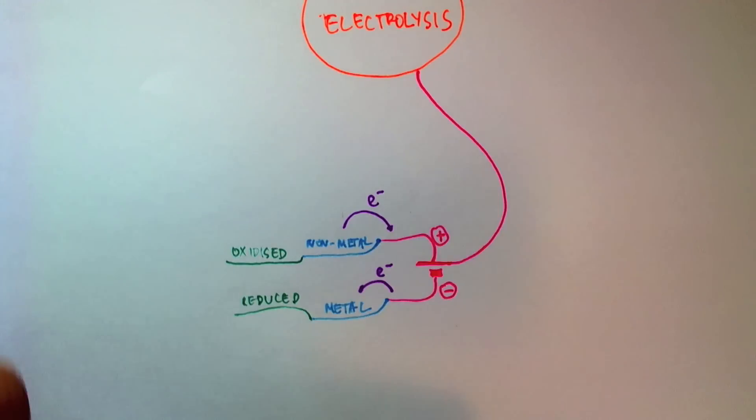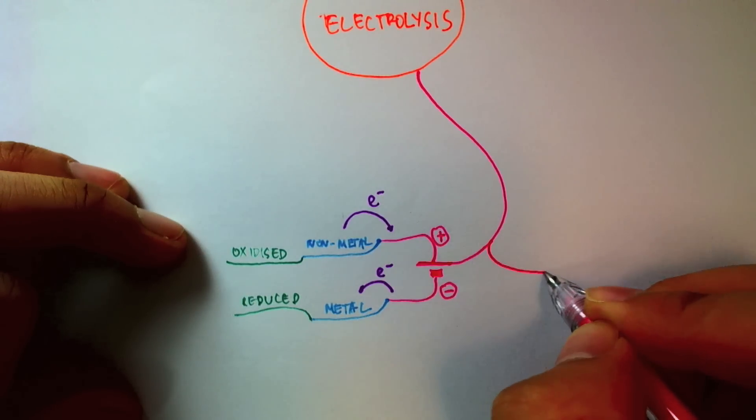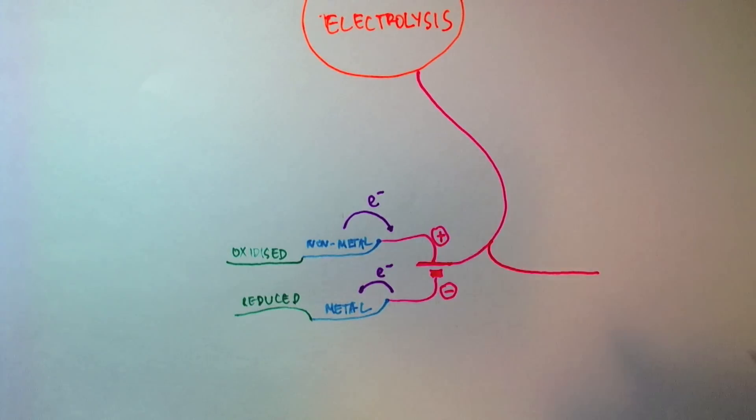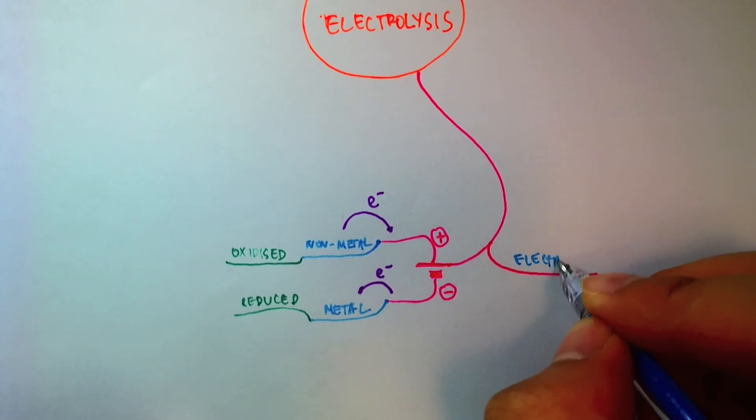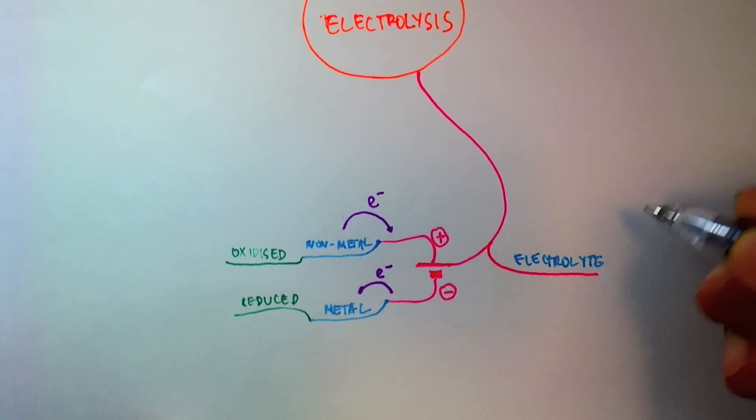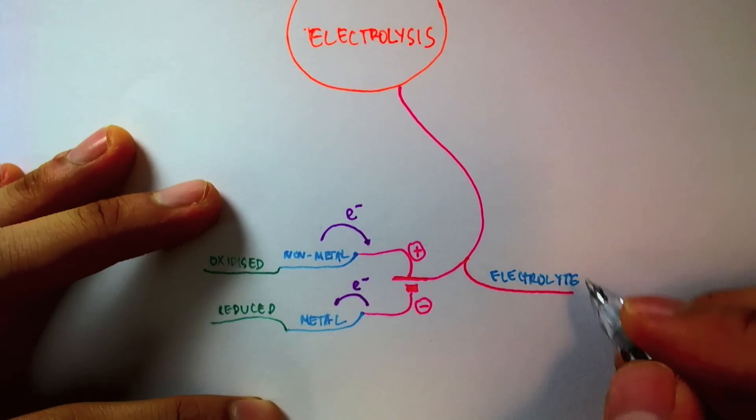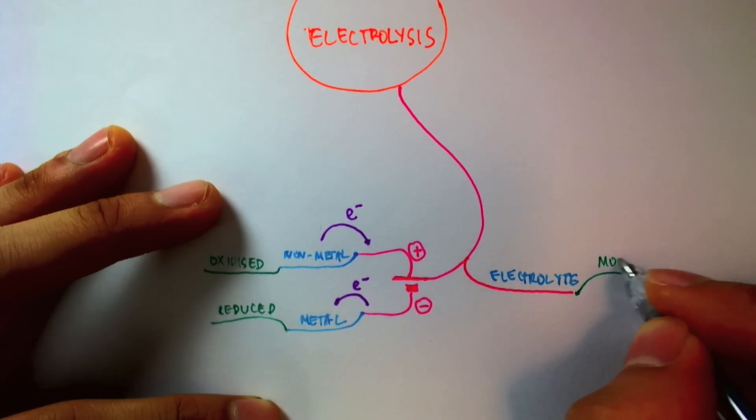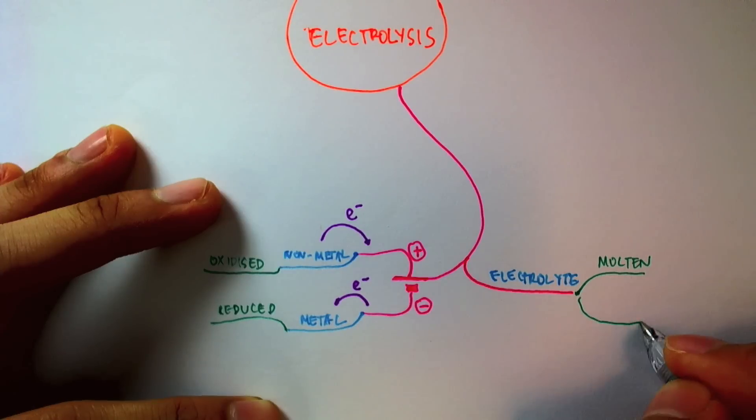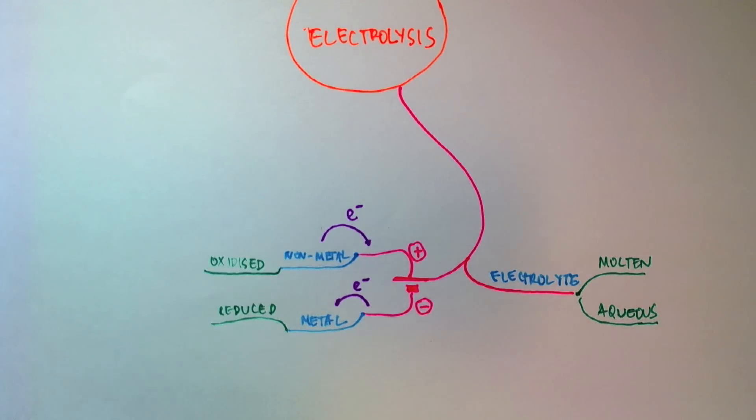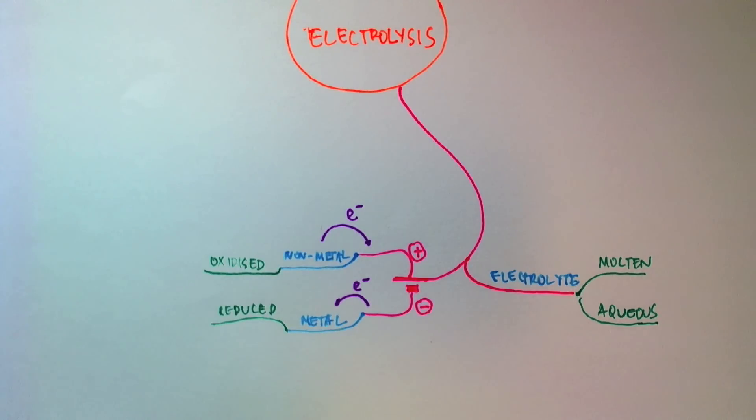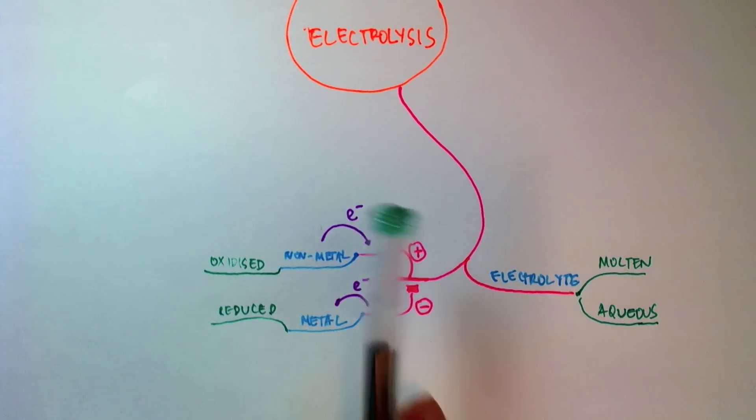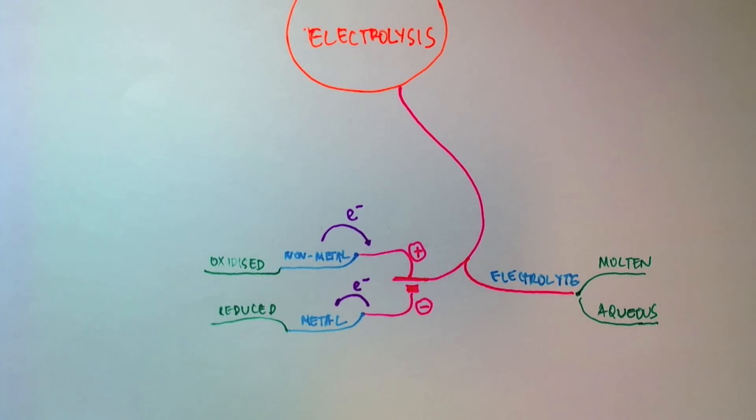And of course, it's important to note that the electrolyte, let's write that down here. Electrolyte will have to be in either a molten or aqueous state, because it is only when it's molten or aqueous that the ions can flow and carry electricity. Whereas if we had a solid lattice, the atoms or ions would all be fixed in place, and that wouldn't work.